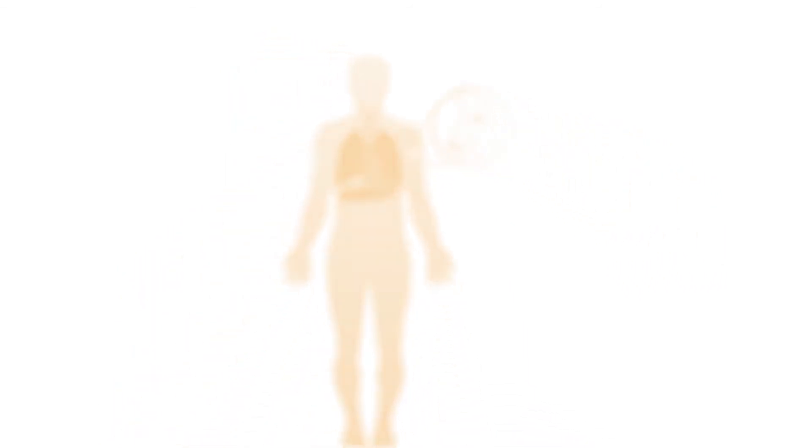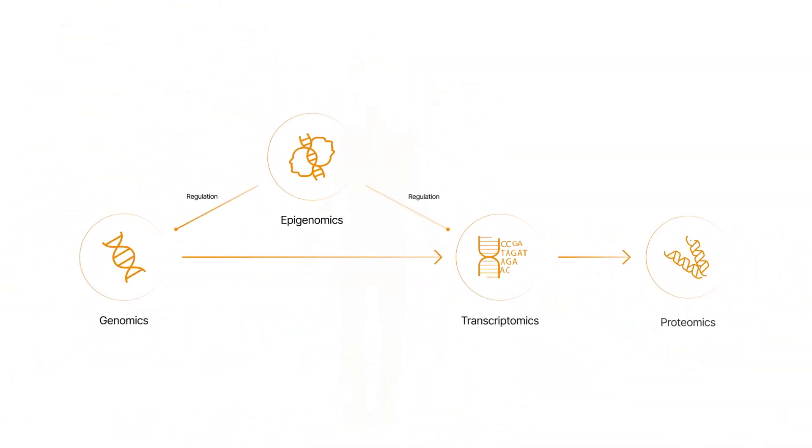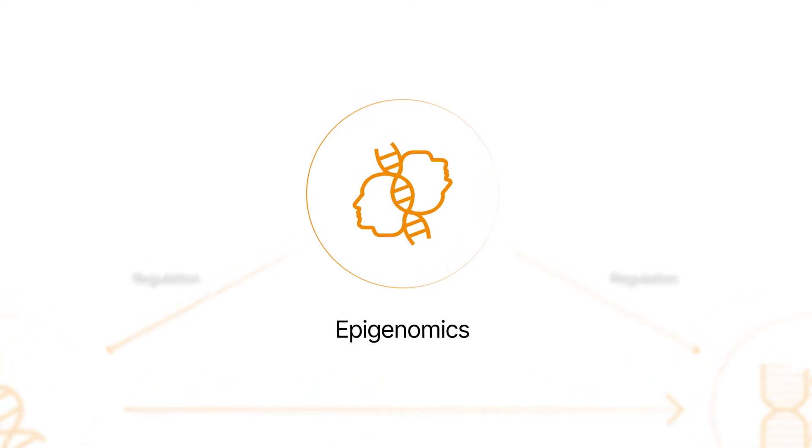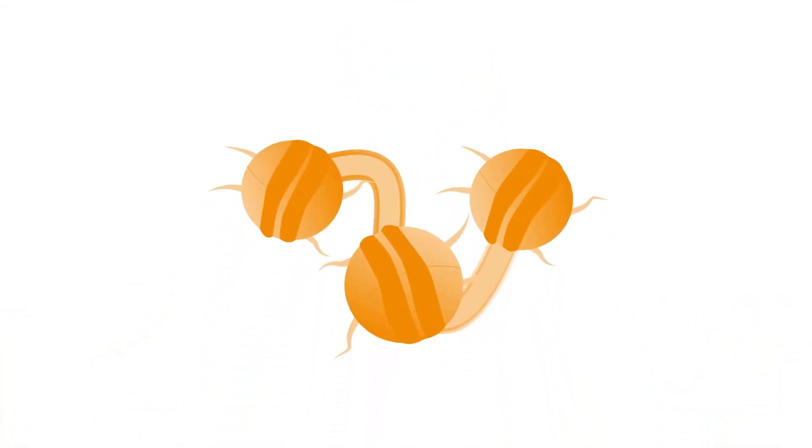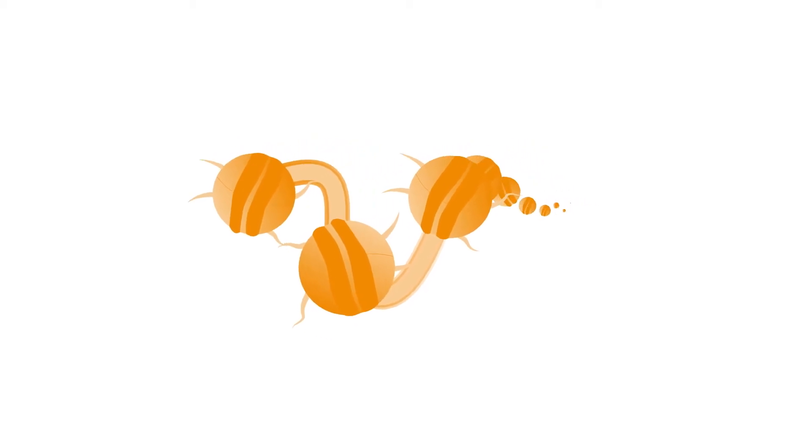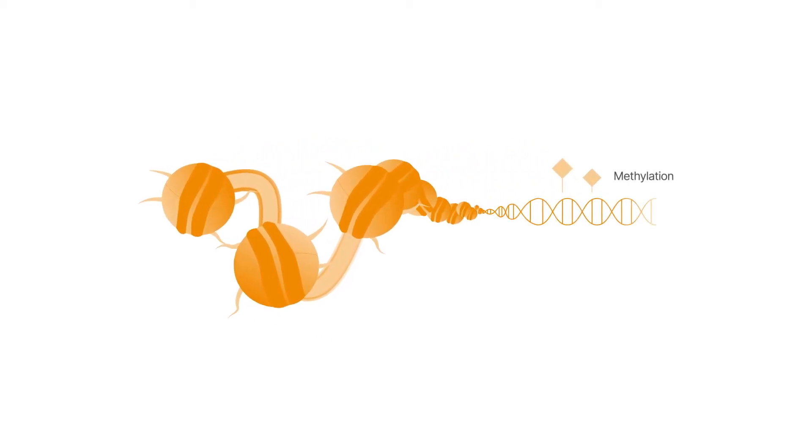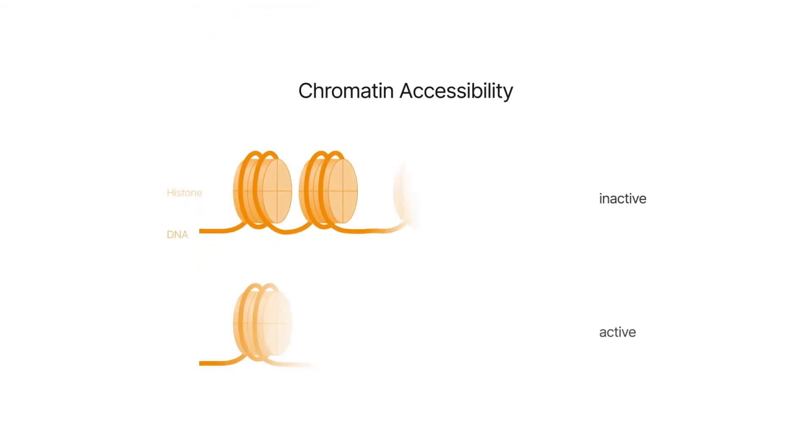A second increasingly popular application of NGS is epigenomic profiling, which can provide mechanistic context for genome regulation in cancer. DNA can be chemically modified without altering gene sequences, but changing gene expression by, for instance, influencing DNA accessibility to transcriptional machinery.